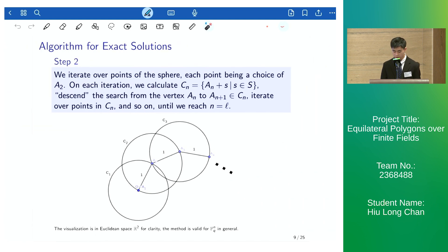In the next step, we iterate over all points of the sphere, each point being a choice of A_2. On each iteration, we calculate the sphere offset by this vertex.